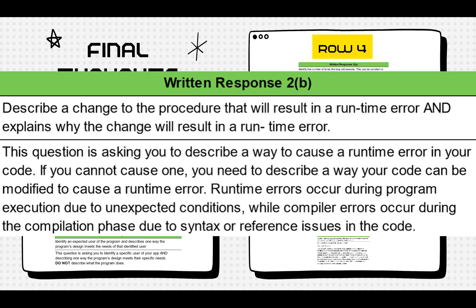Written response 2B. This question is asking you to describe a way to cause a runtime error in your code. If you can't cause one, you need to modify your code to create one. Remember, runtime errors occur during program execution due to unexpected conditions. Compiler errors occur during the compiling phase due to syntax or reference issues in the code.